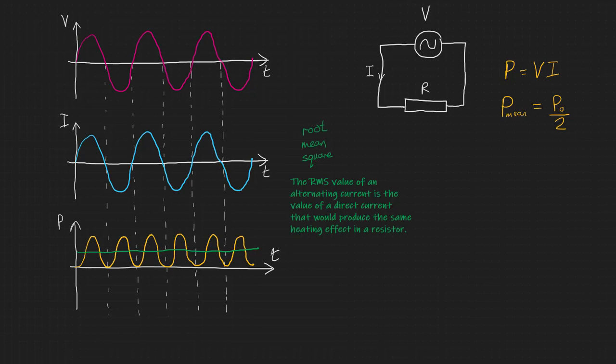since the power dissipated in a resistor is I squared R, it follows that the average power dissipated by an AC supply in a resistor will be the RMS current squared multiplied by R. We can also say that the peak power, P0 is going to be equal to peak current squared multiplied by R.